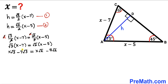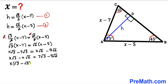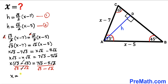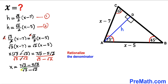Combining like terms by moving x√2 to the left and 7√3 to the right, then factoring out x from the left side: x(√3 minus √2) = 7√3 minus 5√2. Dividing both sides by (√3 minus √2), we get x equals (7√3 minus 5√2) over (√3 minus √2).